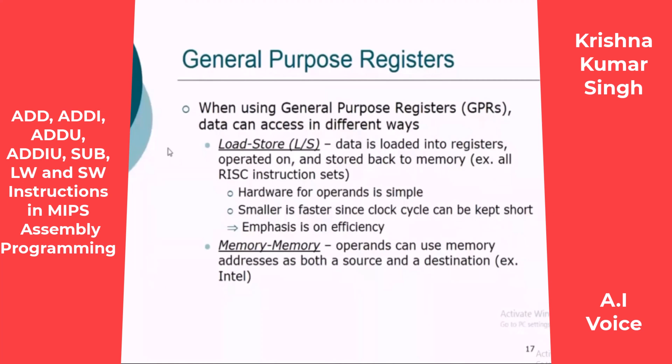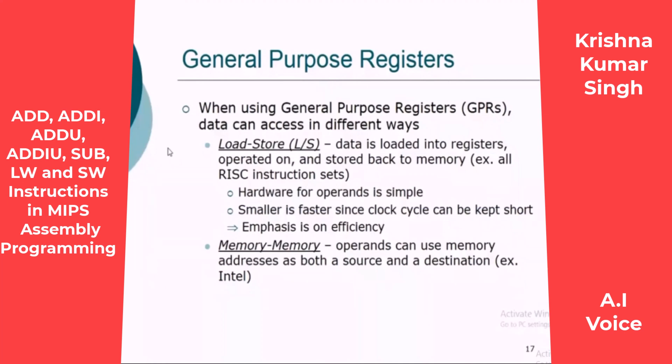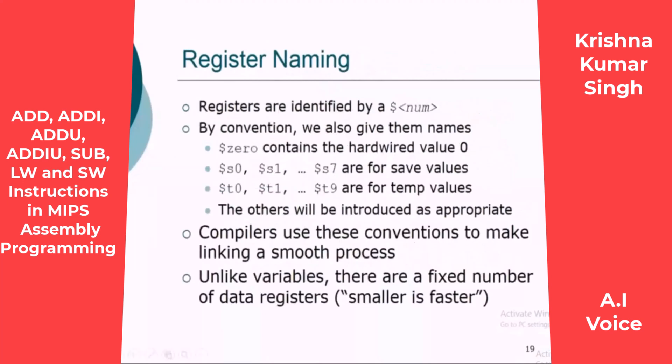For example, in x86, you can add the accumulator with the number at a memory location. So the value of the accumulator register will be added with the value of the variable in memory and the result will be stored in the accumulator. But in MIPS you cannot do it. You must first load the number into one register, and then add that register with the other ones.